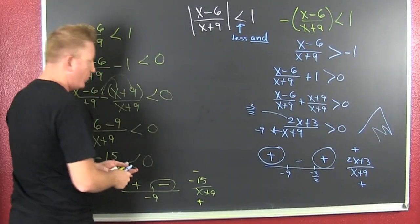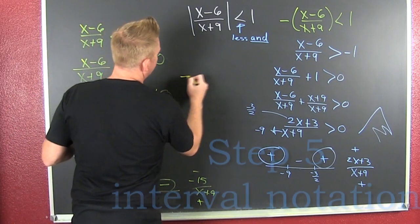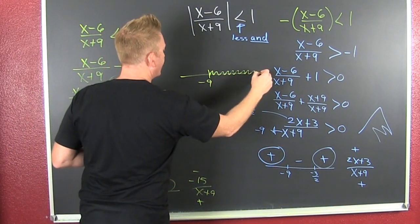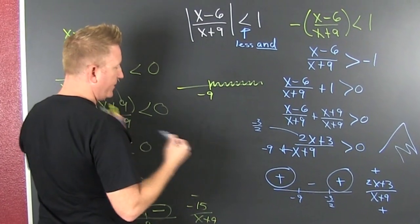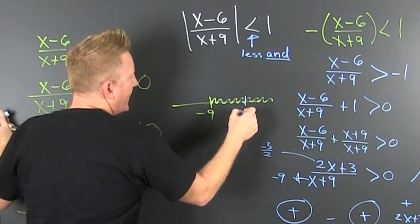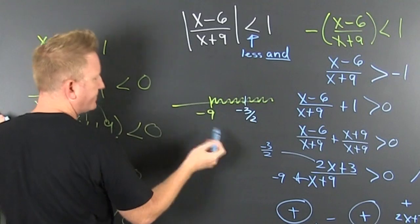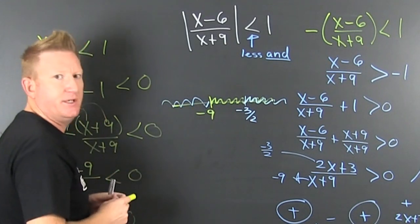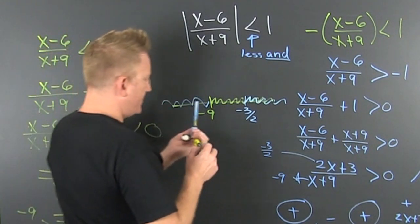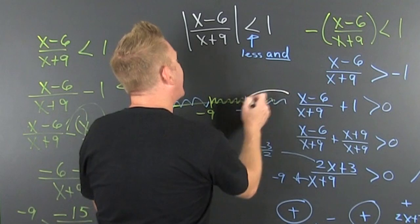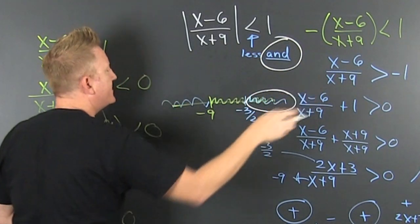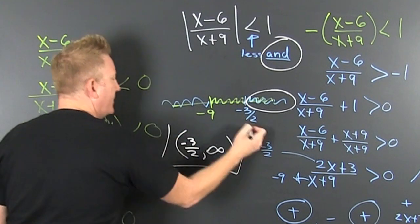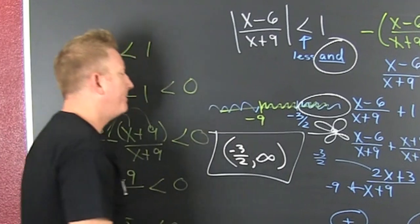This needs to be less than AND — both conditions at the same time. The yellow case (Case 1) is shaded to the left of negative 9 and to the right of negative three-halves. The blue case (Case 2) is shaded to the right of negative 9. Where are they both shaded at the same time? That's the region from negative three-halves to infinity. We write it as (−3/2, ∞).